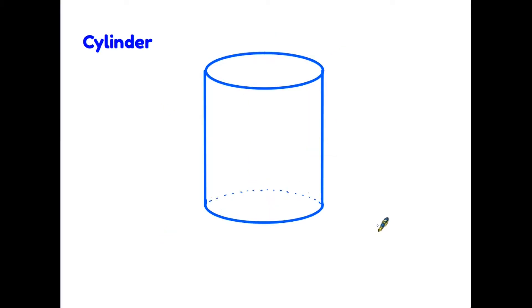And the third shape we need to learn is the cylinder. So a cylinder is certainly very different. It has a circle on the top and a circle on the bottom, and then one side curved all around. There are no corners on a cylinder.